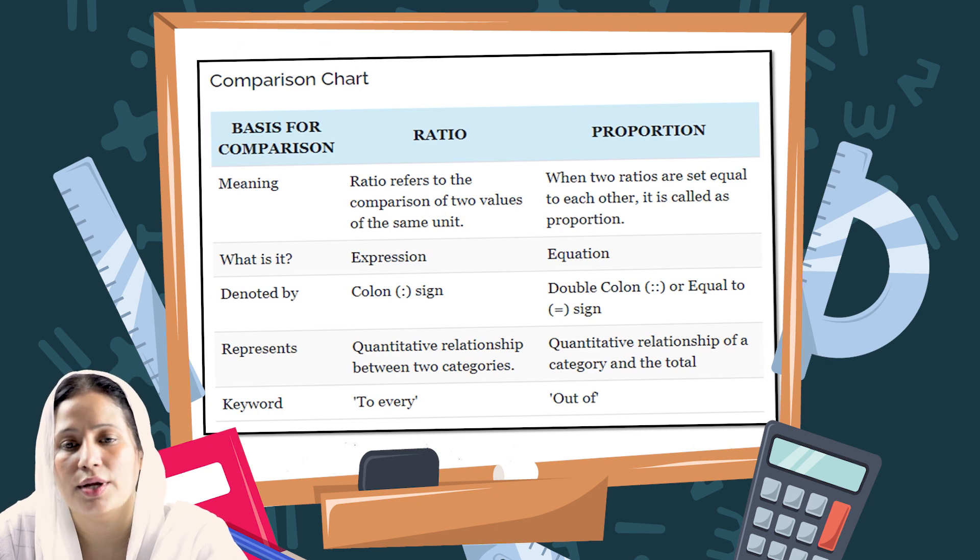Ratio is a quantitative relationship between two categories, and proportion is a quantitative relationship of a category and the total.